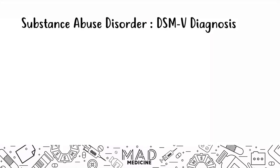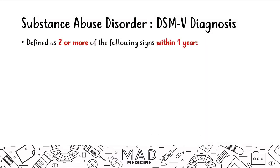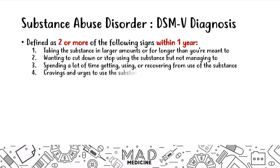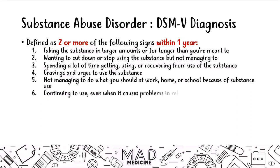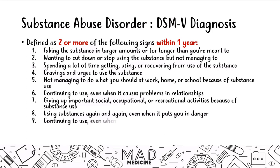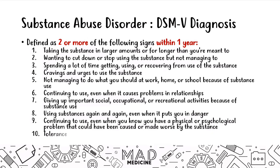When it comes to classifying, there is a DSM-5 diagnostic criteria, defined as having two or more of the following things within a one-year period. I'm not going to list each one out, but you should spend some time with this slide to get a good understanding of what is needed in the DSM-5, because you'll be dealing with this as a medical student and as a physician. This really won't be tested on Step 1, but it's good to know.